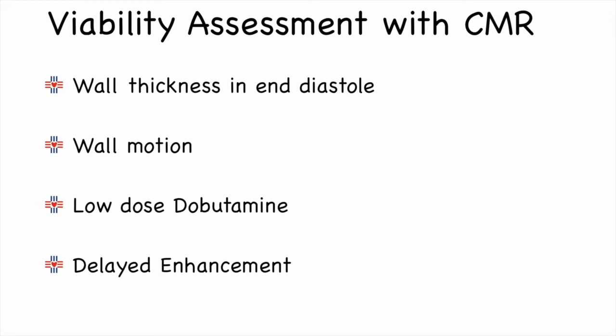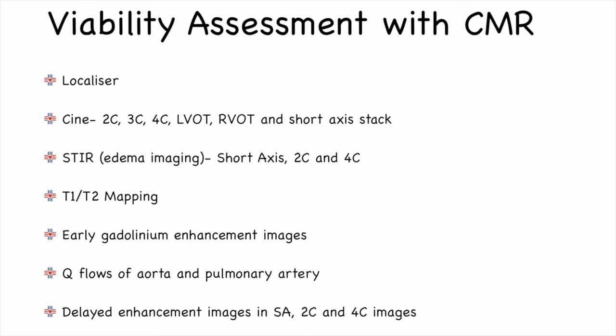Viable segments need to be revascularized and non-viable segments need optimal medical therapy. How do we perform viability assessment with cardiac MR? One: look at wall thickness in end-diastole. Two: look at wall motion of each segment. Three: use low-dose dobutamine. Four: use delayed enhancement technique. The standard cardiac MR protocol includes localizer images, cine images in all standard planes, edema imaging to differentiate acute from chronic infarcts, early gadolinium enhancement images for microvascular obstruction and thrombus, T1 and T2 mapping, and finally delayed enhancement images in short axis, two-chamber, and four-chamber planes.